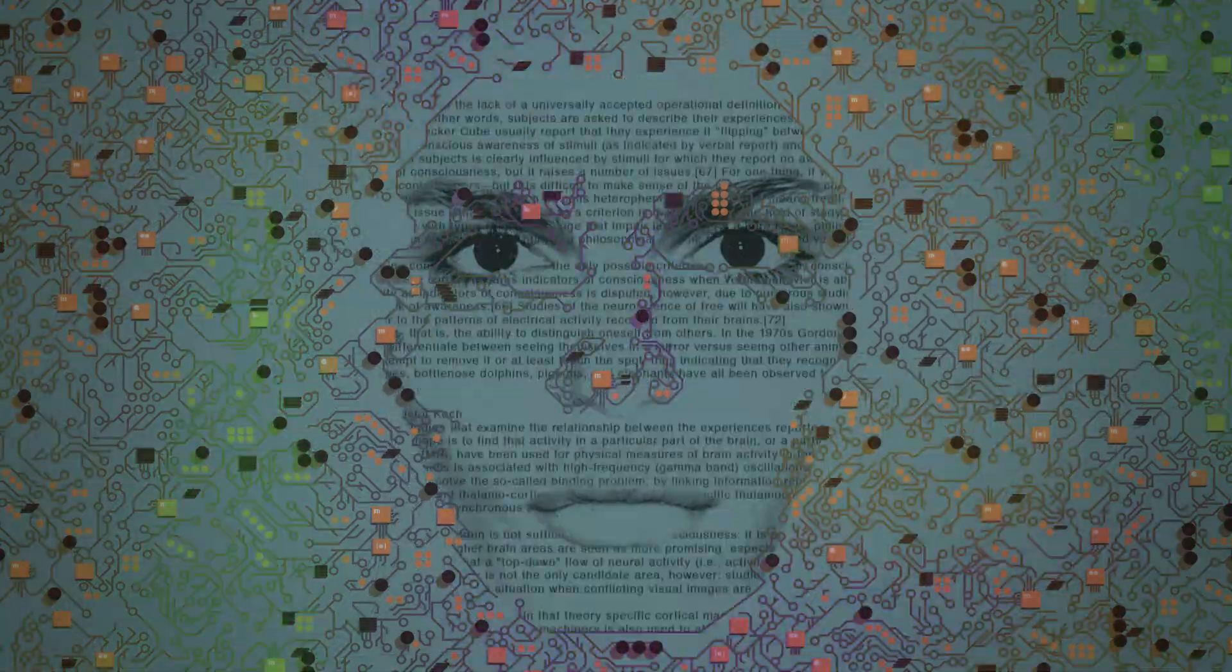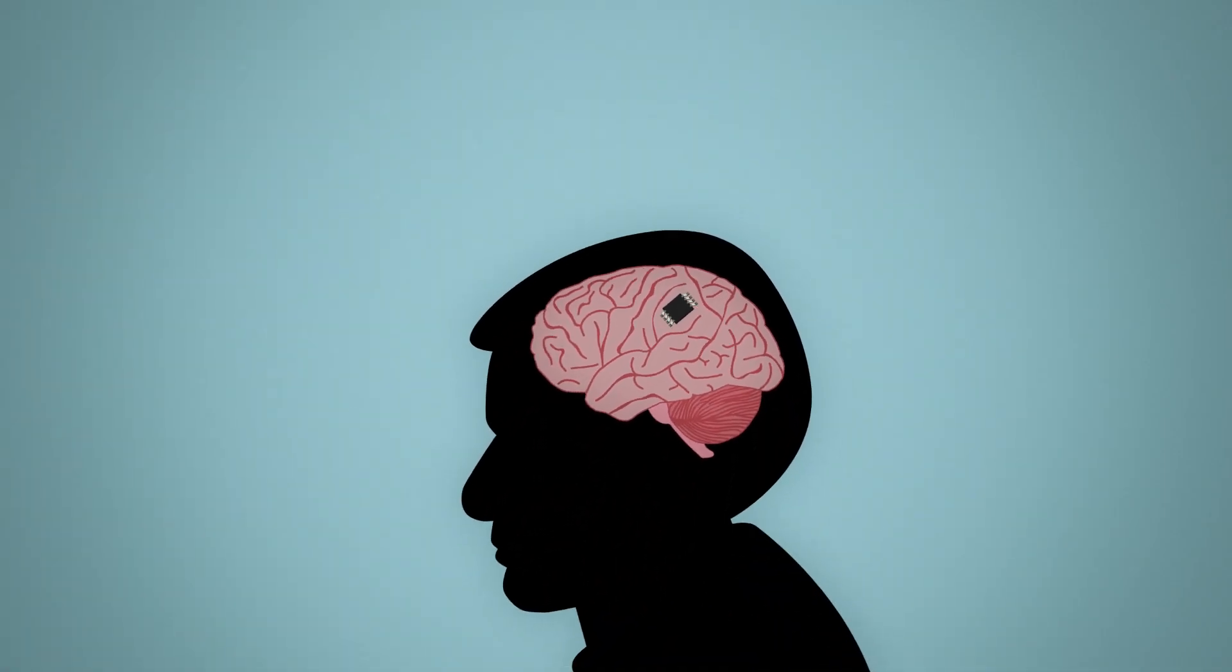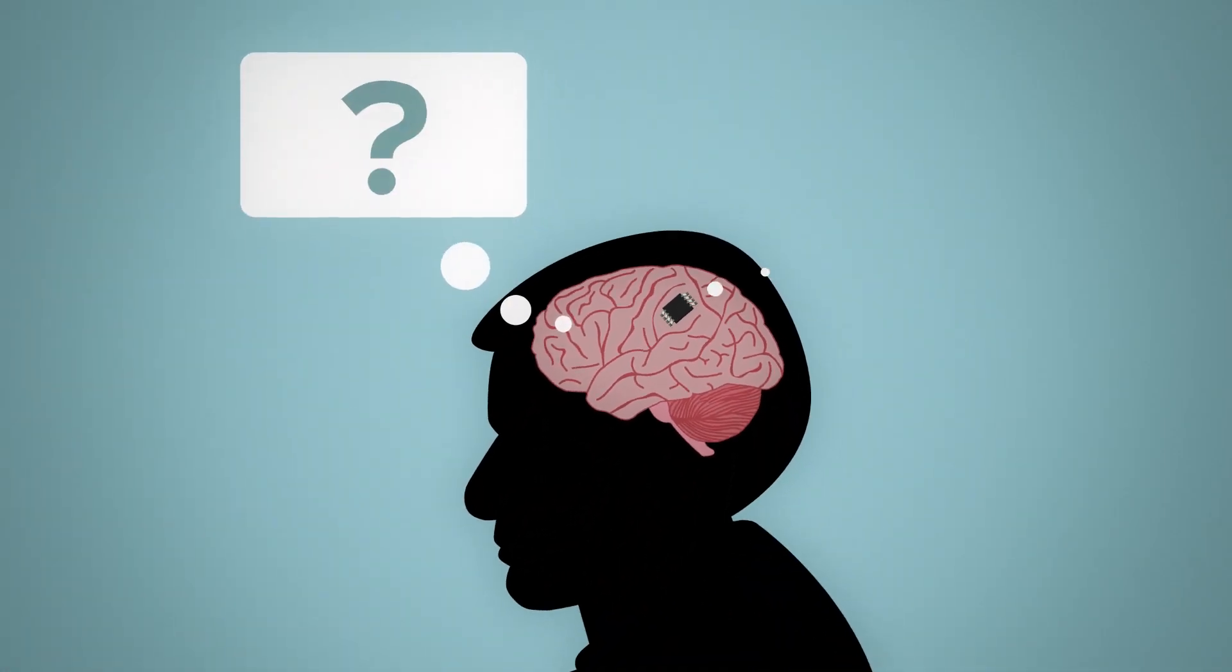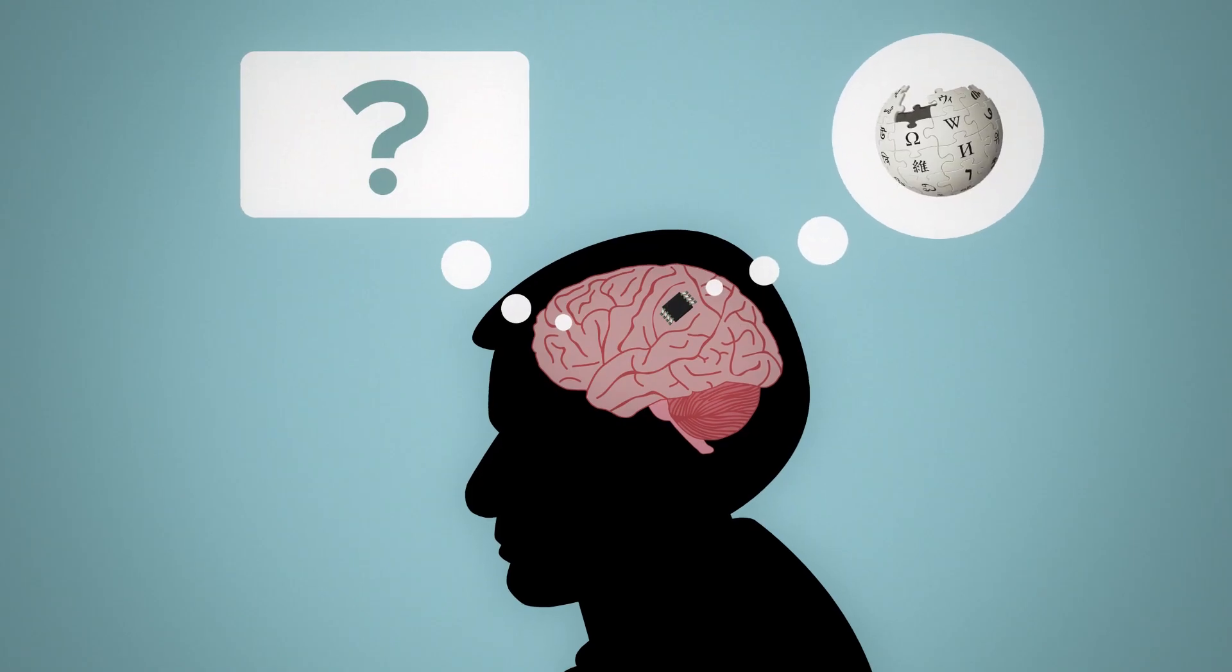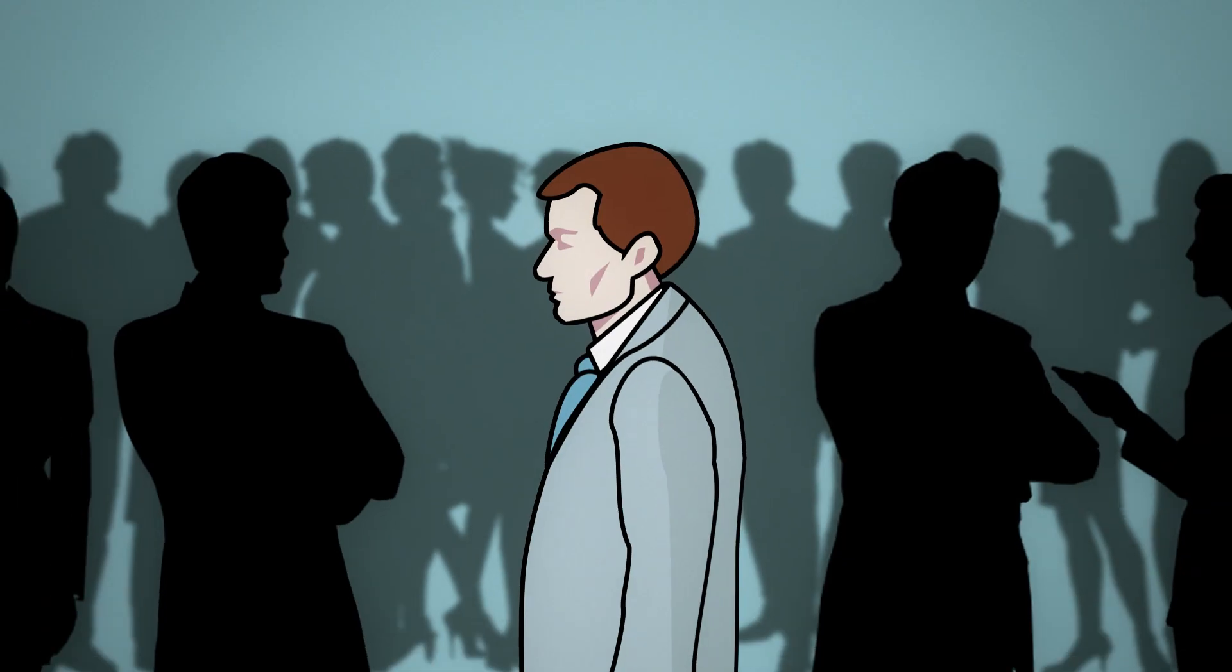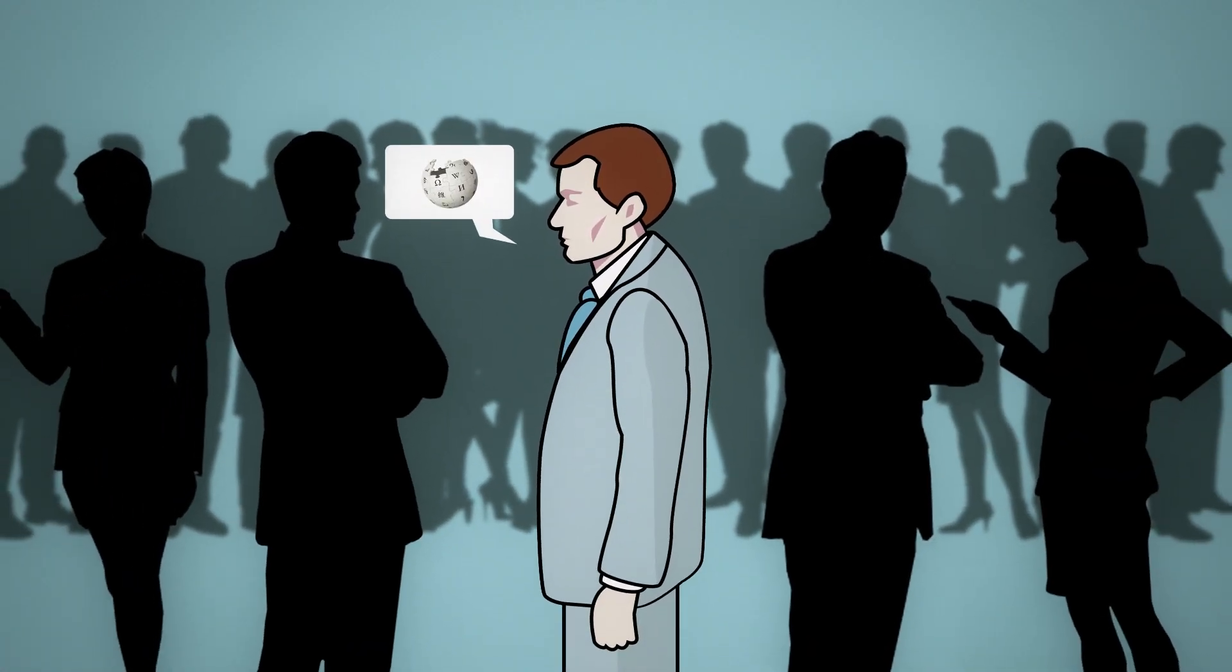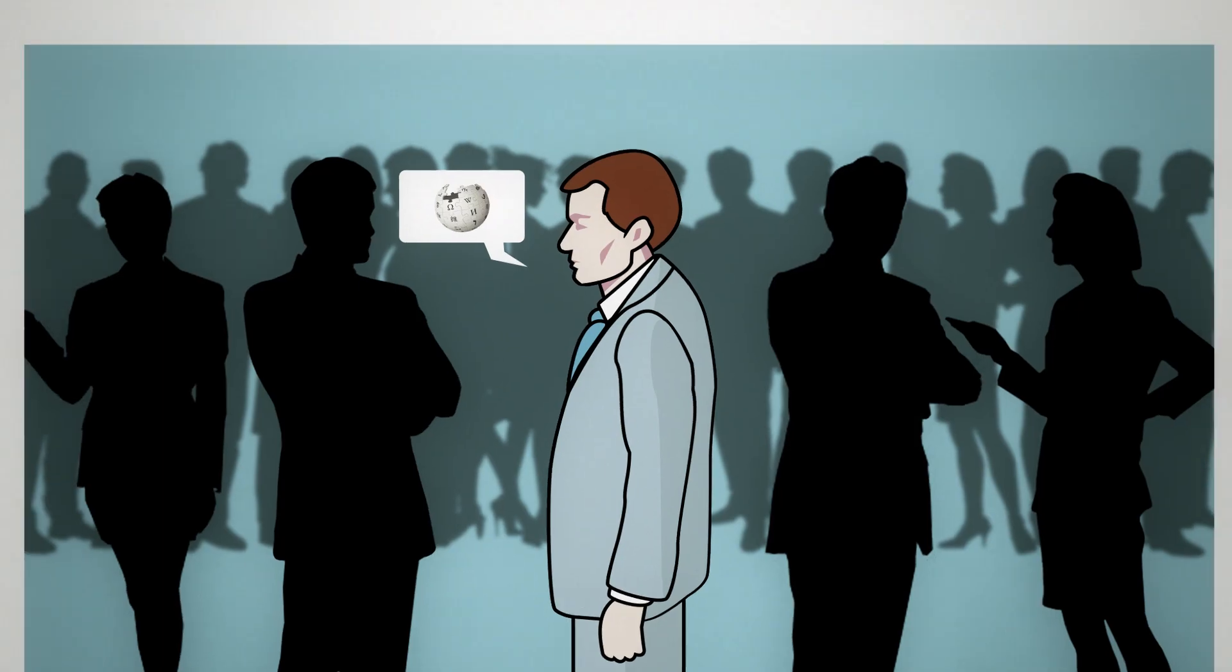If Kurzweil is right and we end up integrating ourselves with technology, we could be in private contact with this AI whenever we choose. The result of this is that we effectively merge with this AI and its abilities become our own. This would propel the human race into a period of super intelligence.